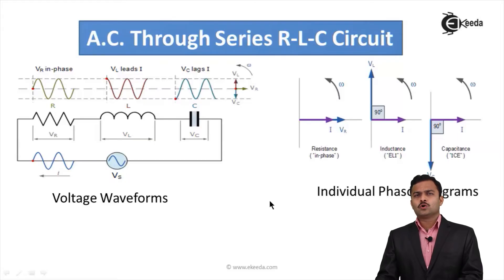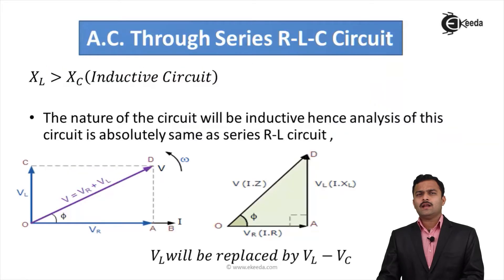Now, total voltage will be addition of VR, VL and VC. Obviously, it is a vector addition. This will give rise to three cases. What will happen if XL is greater than XC? The resultant circuit will be an inductive circuit.